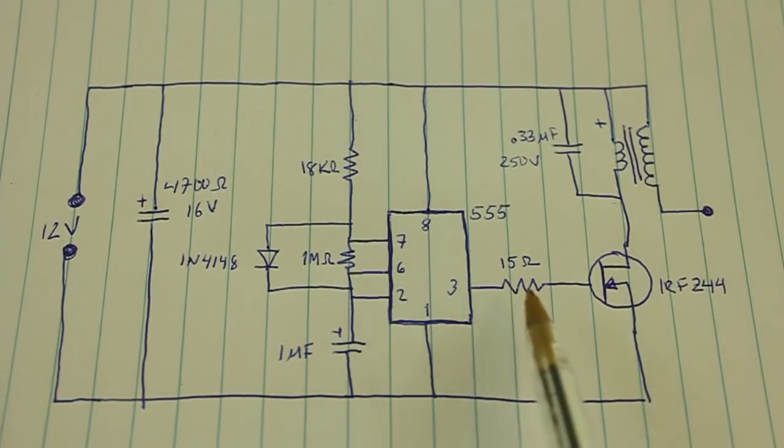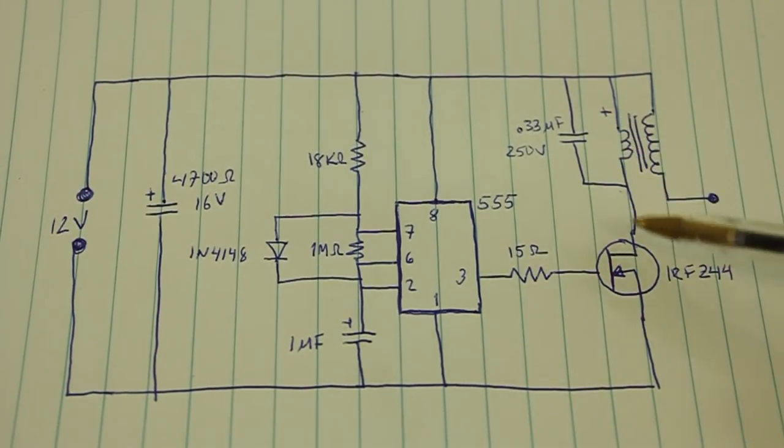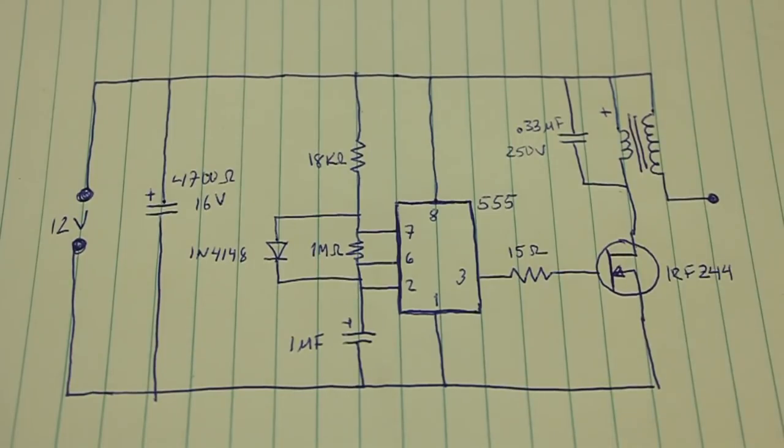When the pulse occurs, the MOSFET conducts and the circuit of the primary is closed, and then we have a pulse of high voltage, approximately 8,000 volts, in the secondary of the ignition coil. With the components as shown, we have a pulse approximately every second.